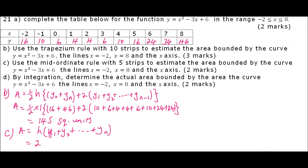The mid-ordinate values will be 10, 4, 6, 16, and 34 — that makes 5 strips: strip 1, strip 2, strip 3, strip 4, and strip 5. So area equals height times the sum of the mid-ordinates: 2 times (10 plus 4 plus 6 plus 16 plus 34), close the bracket. When you compute that, you will get 140 square units. So that is the area using the mid-ordinate rule.